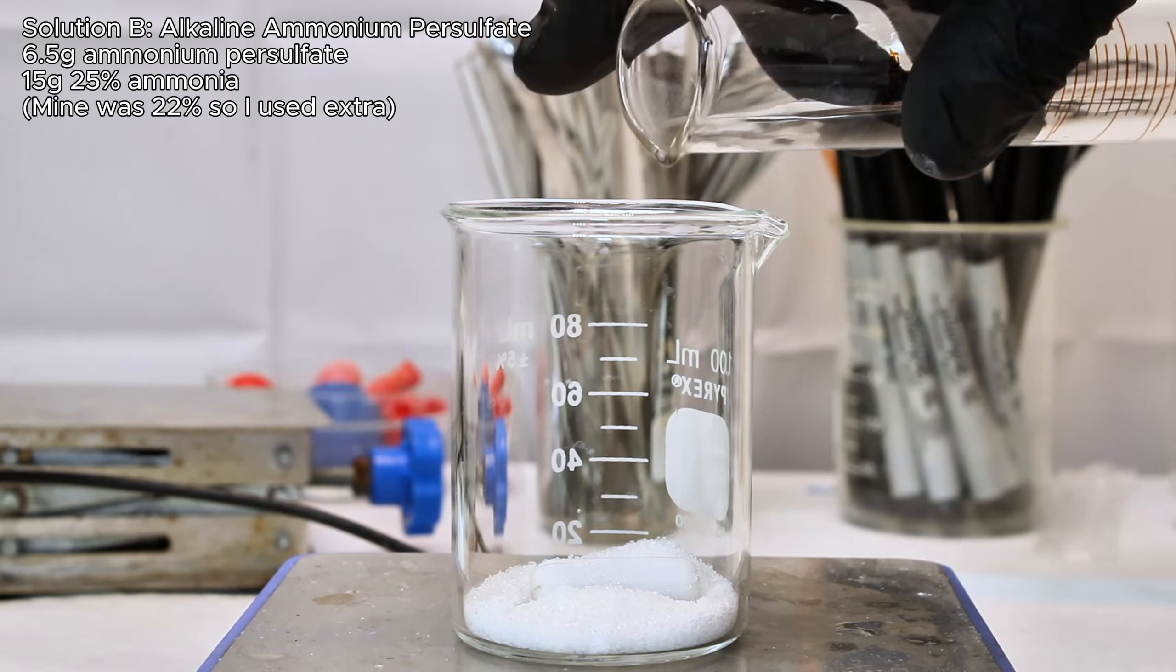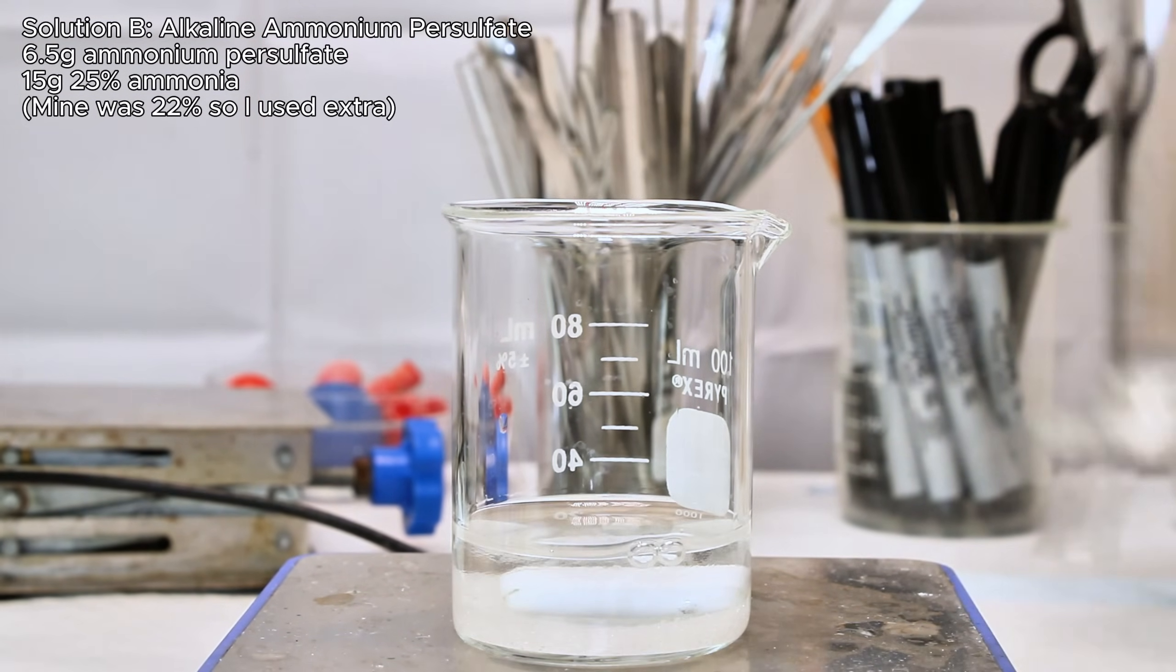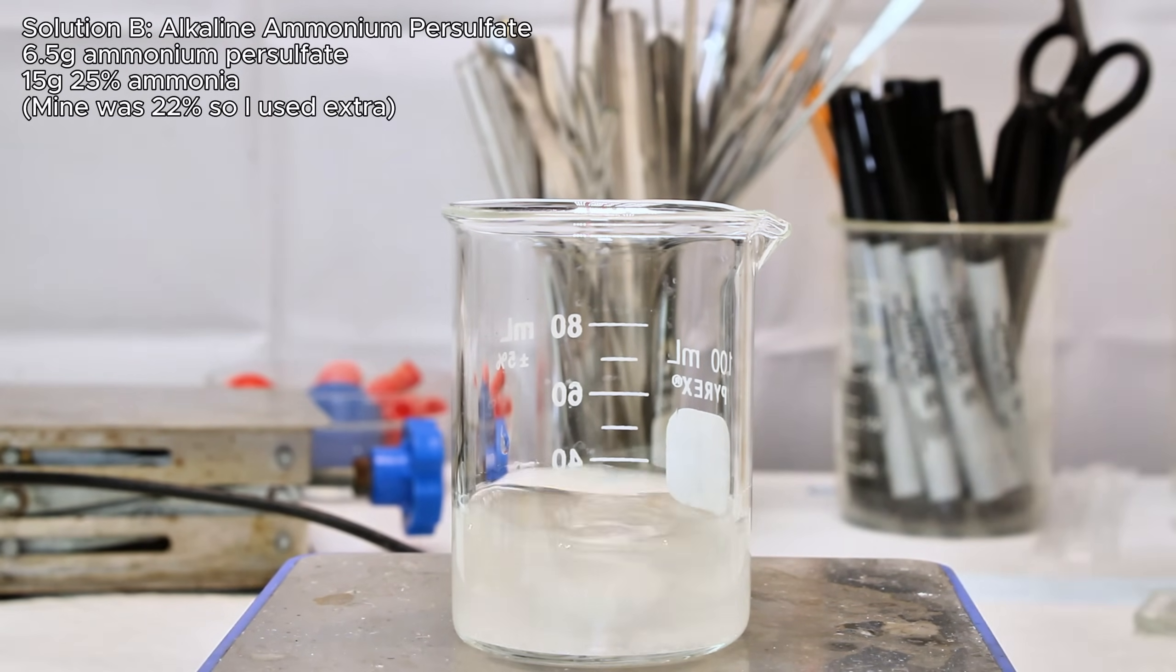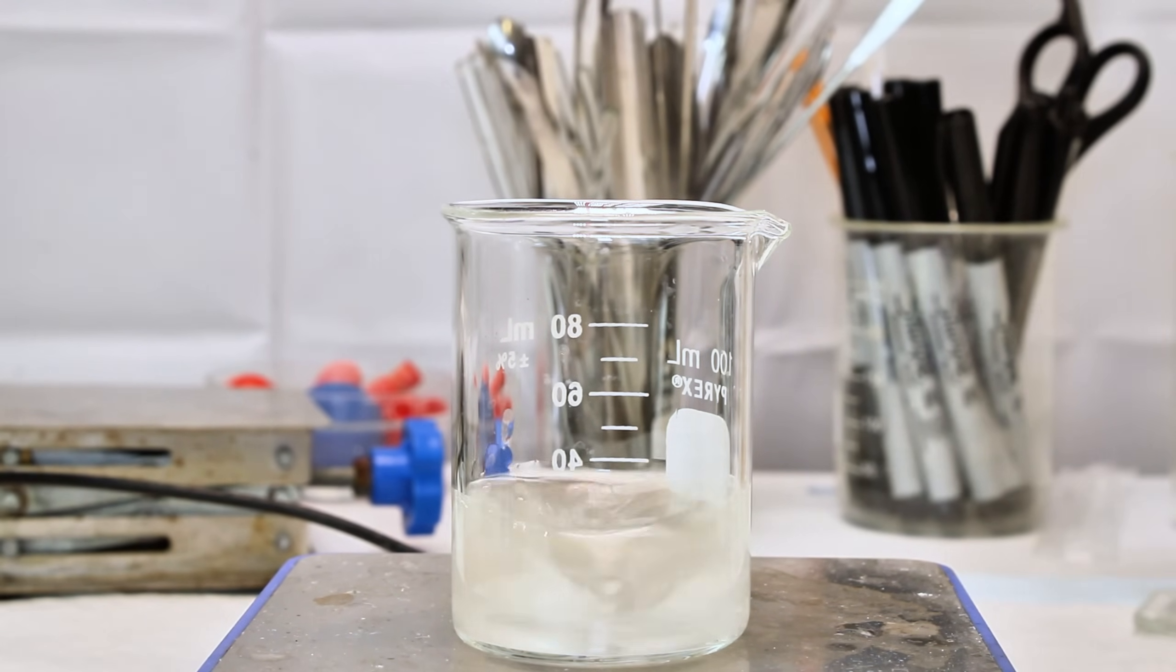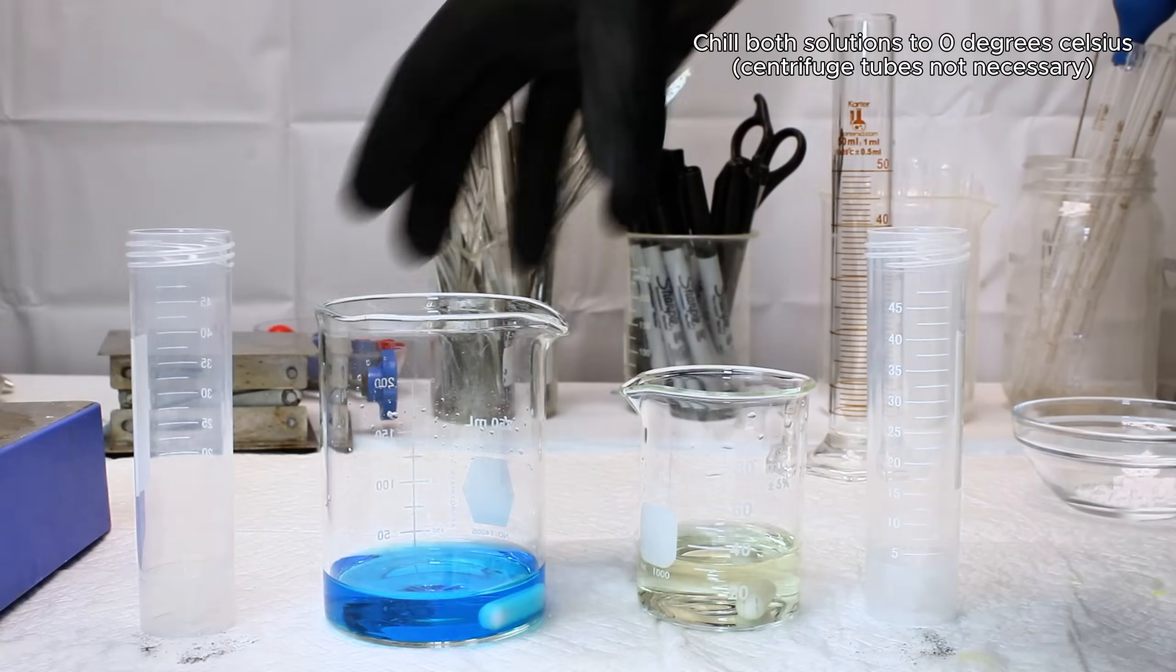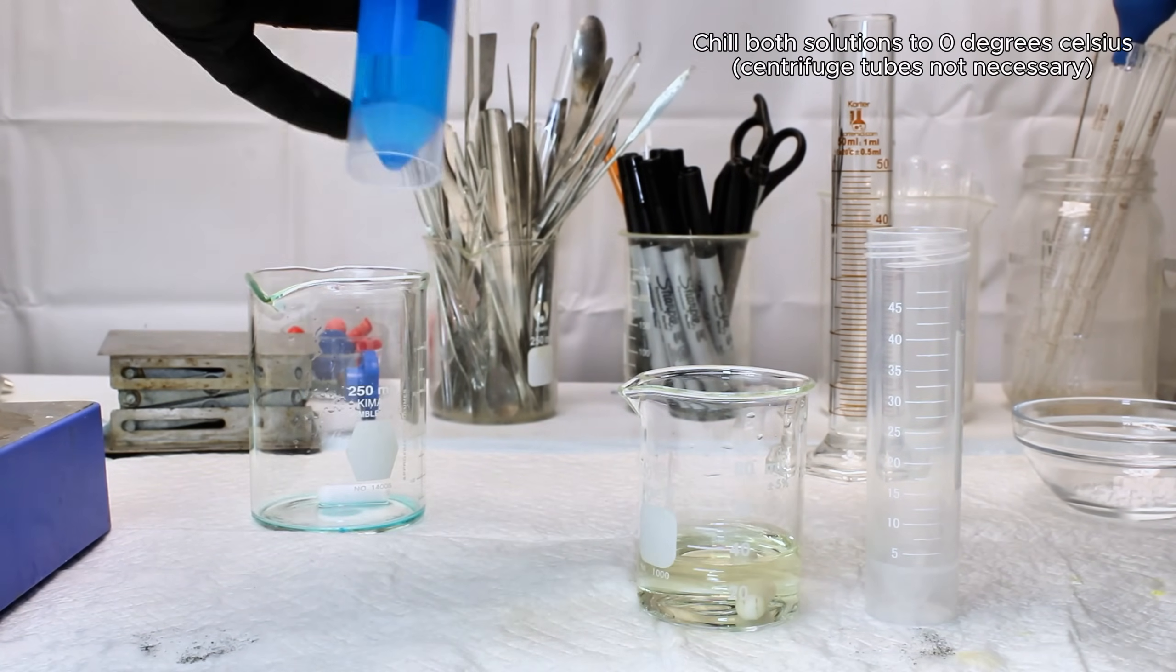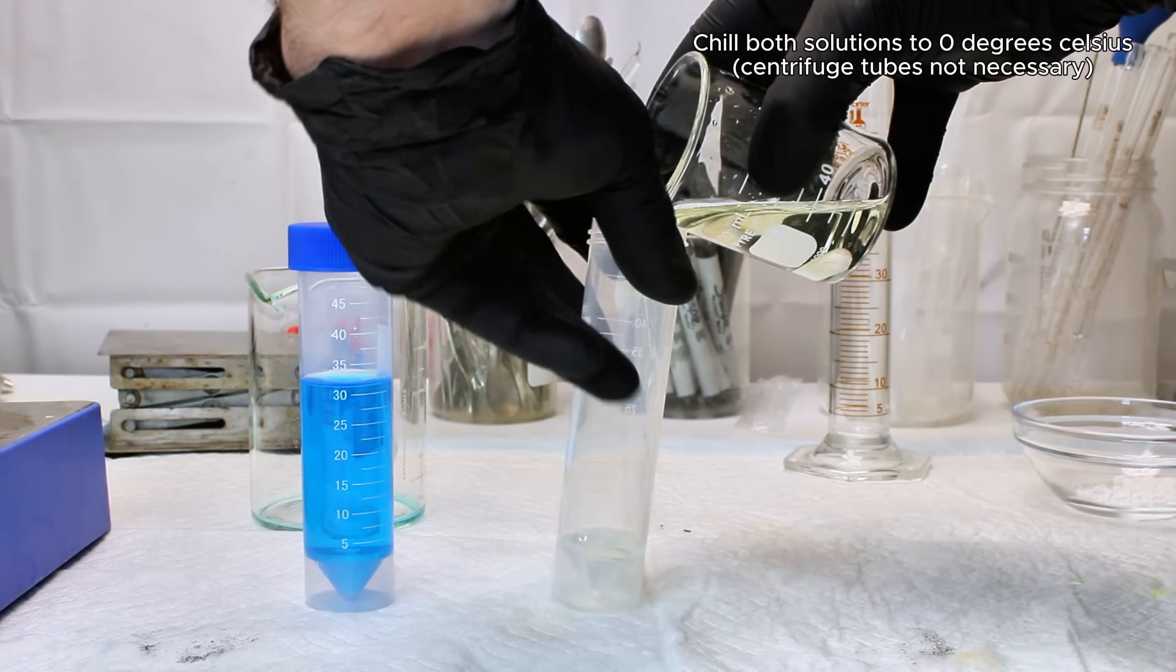Solution B I made by dissolving 6.5 grams of ammonium persulfate in 15 grams of 25% ammonia. This didn't take nearly as long to dissolve, and once it did, I poured both solutions into two separate centrifuge tubes. These were then placed on ice until both solutions had cooled down to nearly 0 degrees Celsius.